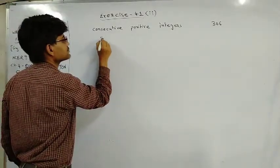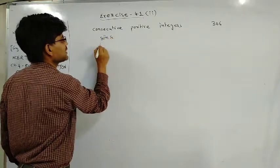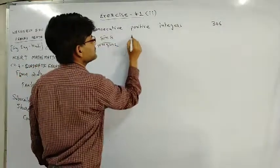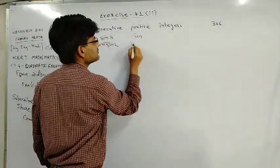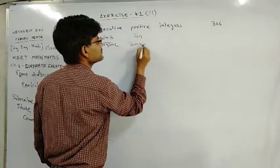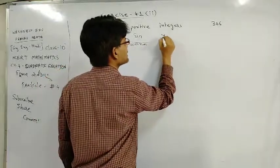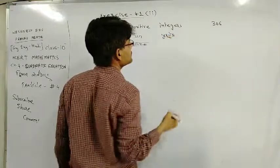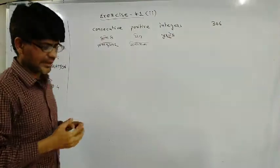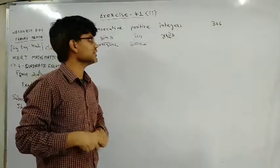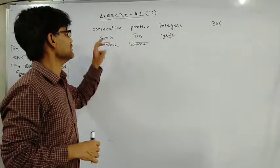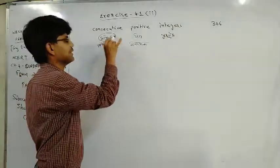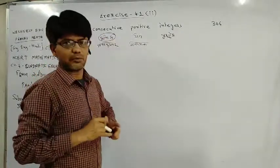I will tell you about this in Hindi and Gujarati. Consecutive means kramik. Positive means dhan or dhanatmak in Hindi. Integers means purnank in both Hindi and Gujarati. What is kramik? We have to understand kramik.